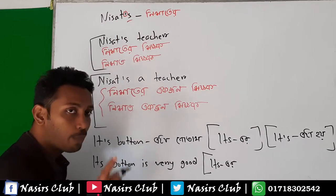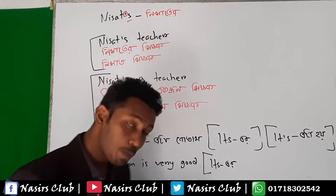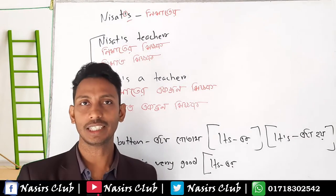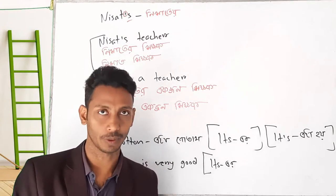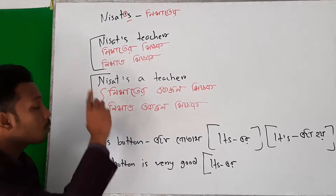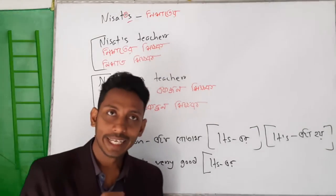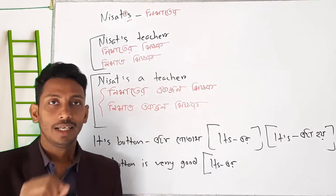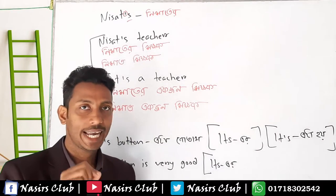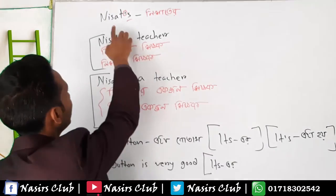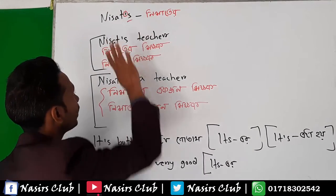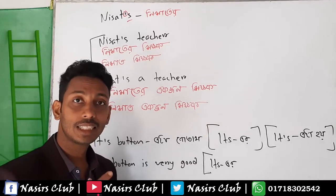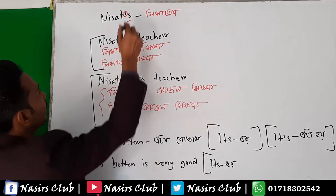Apostrophe S — apostrophe and S. This apostrophe S is called 'air,' meaning possession. This is R-1. Is, was, has — we have to say Nishath's. Apostrophe S is called Nishath's. This is called possession. Then we have to say Nishath's — is, was, has.